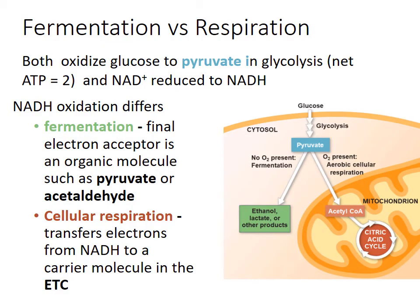Comparing fermentation and respiration: both oxidize glucose in glycolysis with a net gain of 2 ATP — glycolysis actually produces 4 ATP but you spend 2, so you take home 2. Both also reduce NAD to NADH. The difference is what happens with the NADH. In fermentation, the final electron acceptor is an organic molecule like pyruvate or acetaldehyde, producing ethanol, lactate, or other fermentation products. In cellular respiration, electrons transfer from NADH through the electron transport chain to make far more ATP. Fermentation makes only 2 ATP; cellular respiration makes way more.